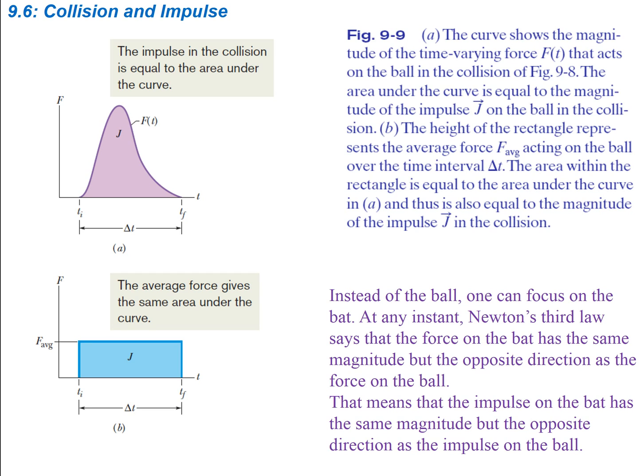Instead of focusing on the ball, one can focus on the bat. At any instant, Newton's third law says that the force on the bat has the same magnitude but opposite direction as the force on the ball. That means the impulse on the bat has the same magnitude but the opposite direction as the impulse on the ball.